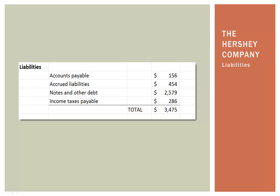Here are liabilities. Accounts payable are things that Hershey has to pay someone else. They have accrued liabilities — things they will have to take care of at some point — notes and other debt, and of course income taxes. Those are obligations they have to someone else.